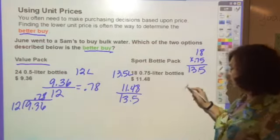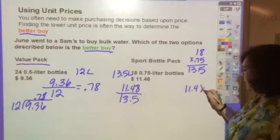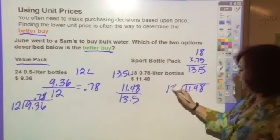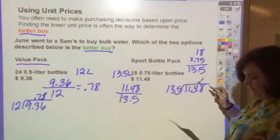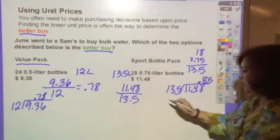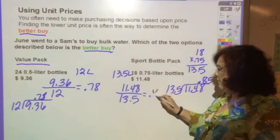And then if you divide this out, 11.48 divided by 13.5, you'd have to move your decimal, and you'd get 85 cents. So this equals $0.85.